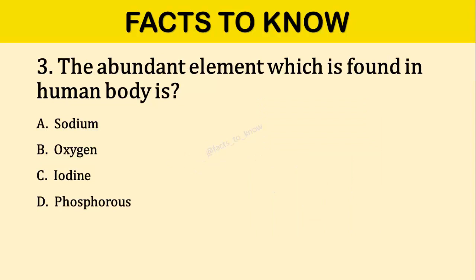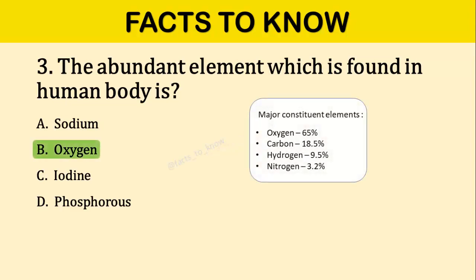Question number three: The abundant element which is found in the human body is? The correct answer is option D: Oxygen. 65% of oxygen is found in the human body.